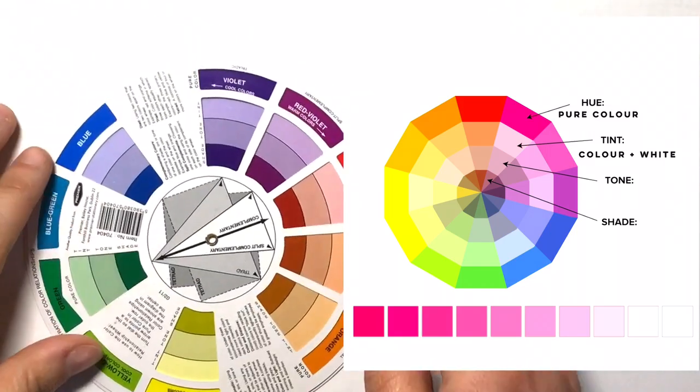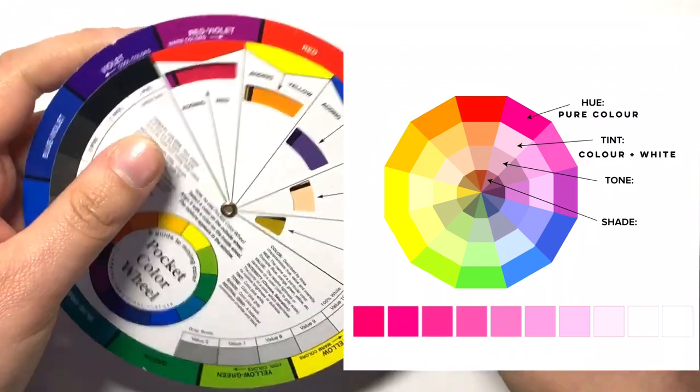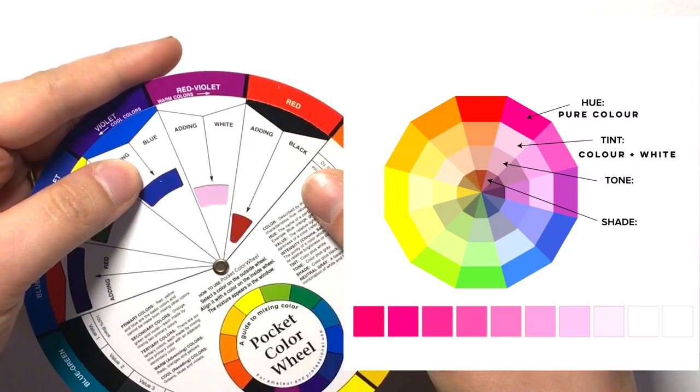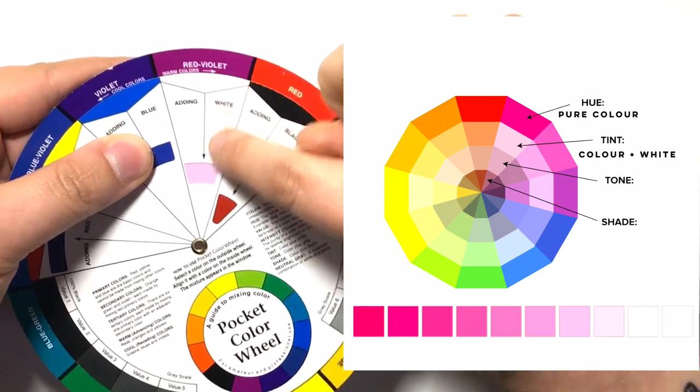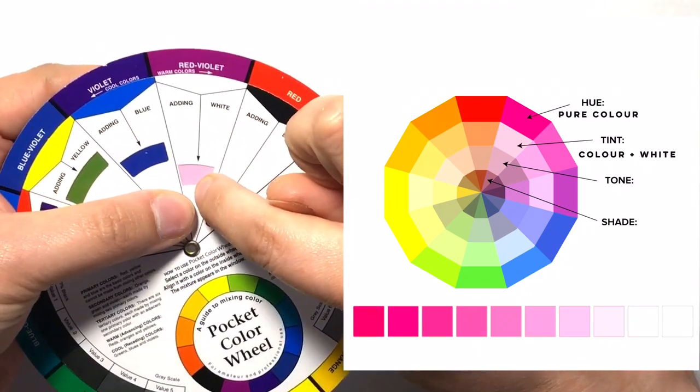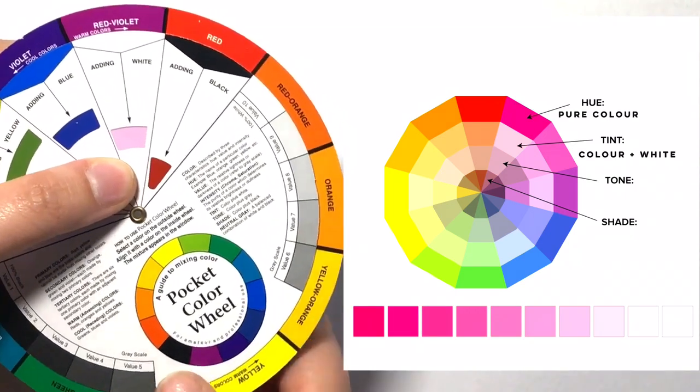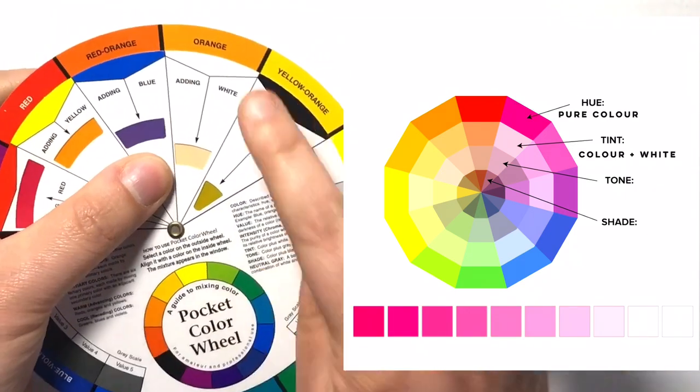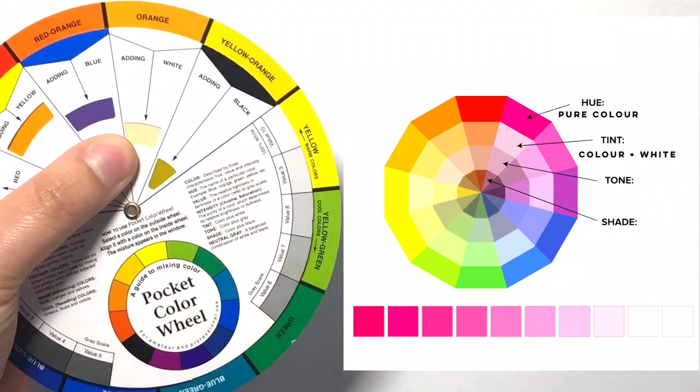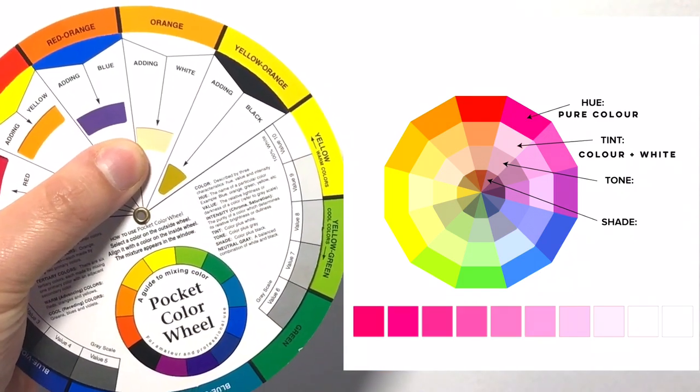So for example, if we add white to red violet, let's have a look on here. So red violet adding white creates a beautiful shade of light pink. Now adding white to orange, let's move it across here. So adding white to orange gives us peach, which is a tint of orange.